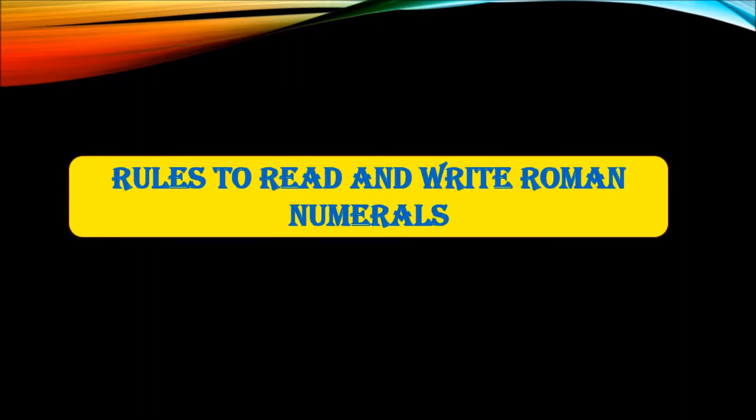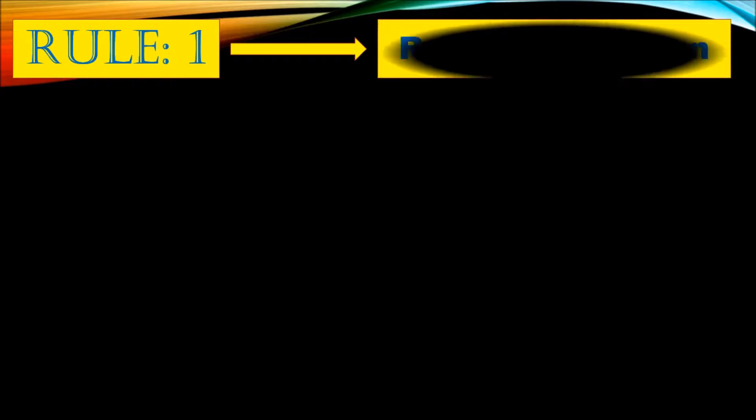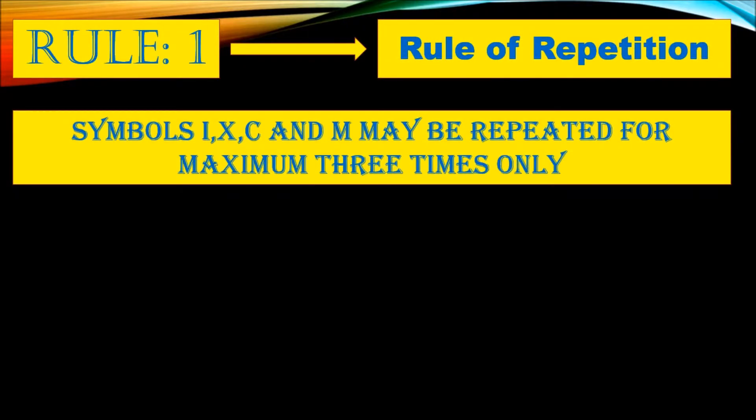Now let's see some rules to read and write Roman numerals. Rule one: rule of repetition. Symbols I, X, C, and M may be repeated for a maximum three times only.